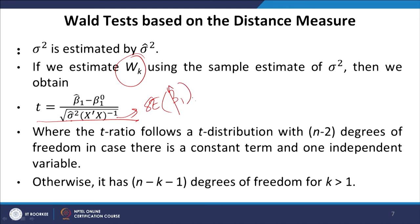The t ratio follows a t distribution with n minus 2 degrees of freedom when there is a constant term and one independent variable; otherwise, the t distribution has degrees of freedom equal to n minus k minus 1 for any k greater than 1.